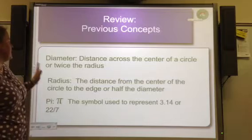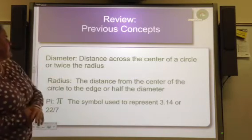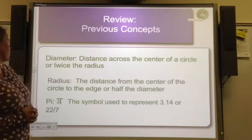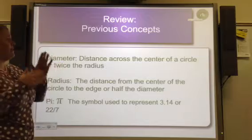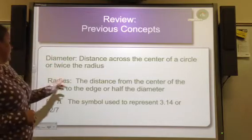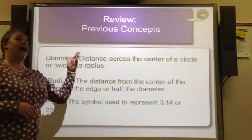Review previous concepts. If you don't have these already written down, you need to write them down this time. Diameter is the distance across the center of a circle or twice the radius. So again, radius is the halfway point, diameter is all the way across. Radius is the distance from the center of the circle to the edge or half of the diameter.